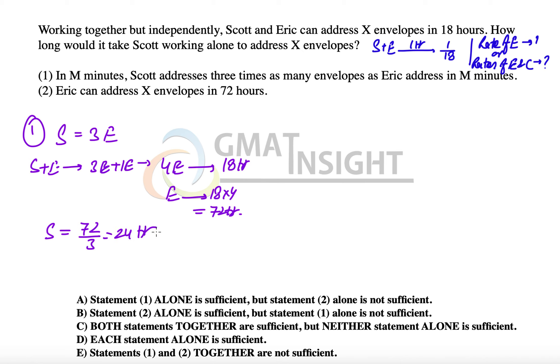by 3, which is 24 hours. Because efficiency is inversely proportional to time, Scott is three times as efficient, therefore the time Scott takes is one-third of the time Eric takes. The first statement alone is sufficient, which leaves us with two options: option A and option D.